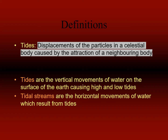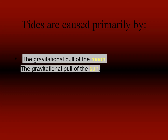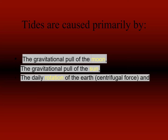Tidal phenomena are not limited only to the oceans but can occur in other systems whenever a gravitational field that varies in time and space is present. For example, the shape of the solid part of the earth is affected slightly by the earth tide, though this is not as easily seen as water tidal movements. While tides are usually the largest source of short-term sea level fluctuations, sea levels are also subject to forces such as wind and barometric pressure changes, which result in something called storm surges, especially in shallow seas and near coasts.